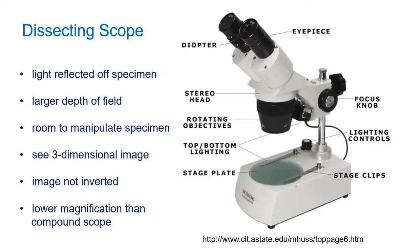We use two different types of light microscopes in a biology lab. The first is the dissecting light microscope. As the name suggests, you can work under this microscope — you can manipulate specimens and dissect them. For instance, you might dissect a large insect, or use it in a geology lab to look at minerals. It also has a larger depth of field.